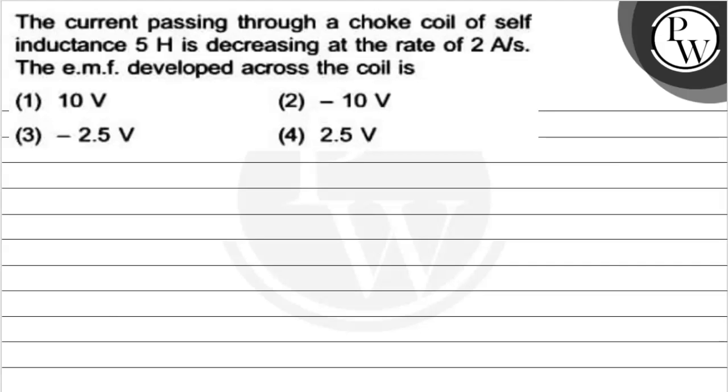Hello Bacho. Let's see this question. The question says, the current passing through a choke coil of self inductance 5 H is decreasing at the rate of 2 ampere per second. The EMF developed across the coil is 10 volt, minus 10 volt, minus 2.5 volt or 2.5 volt.